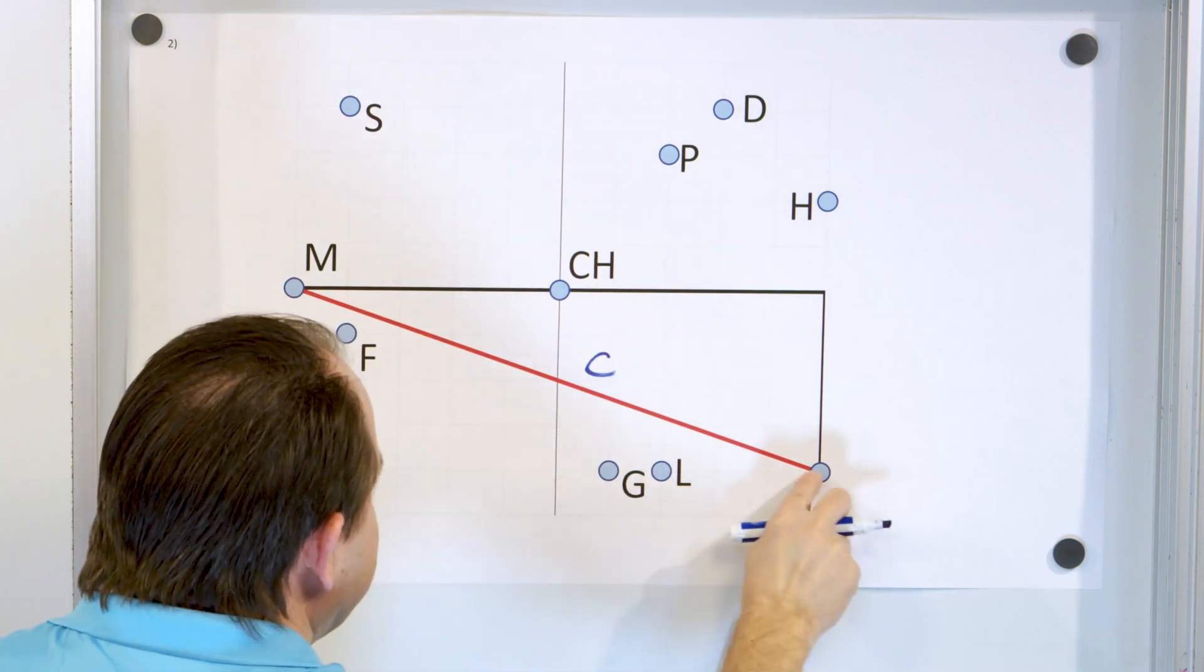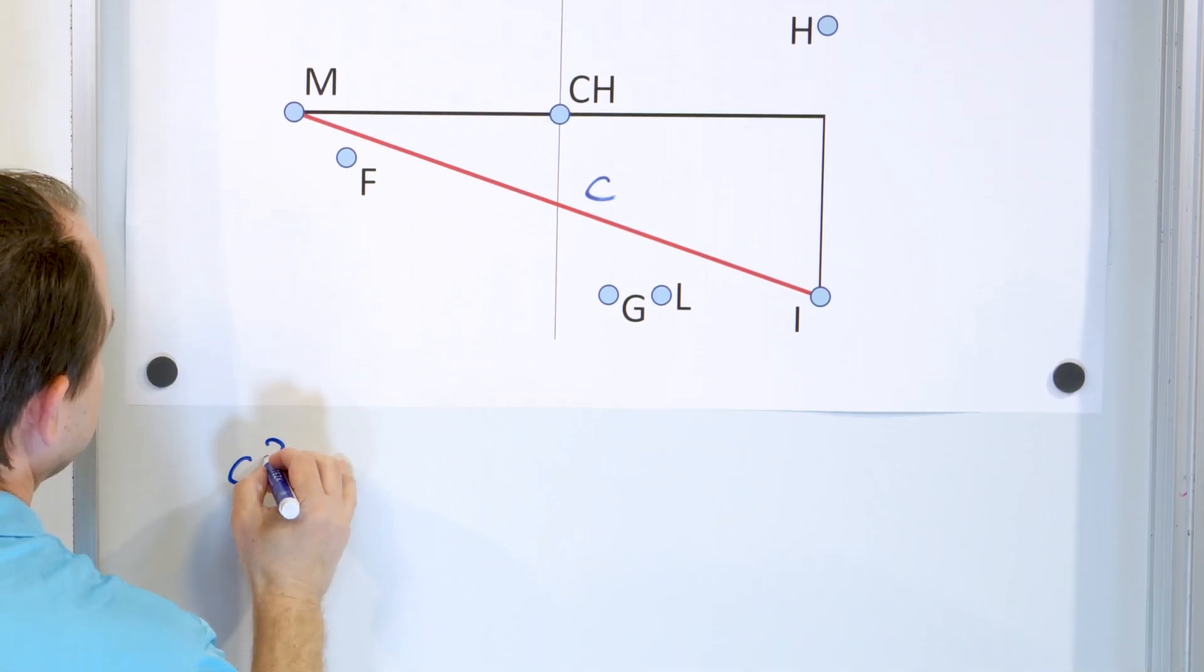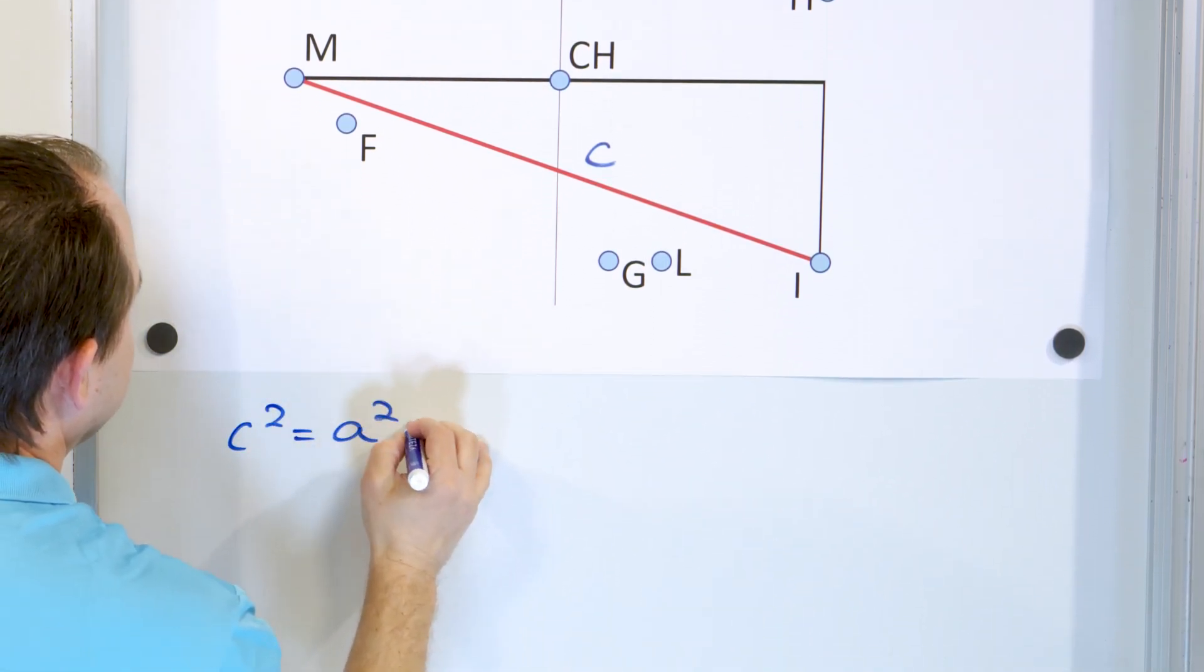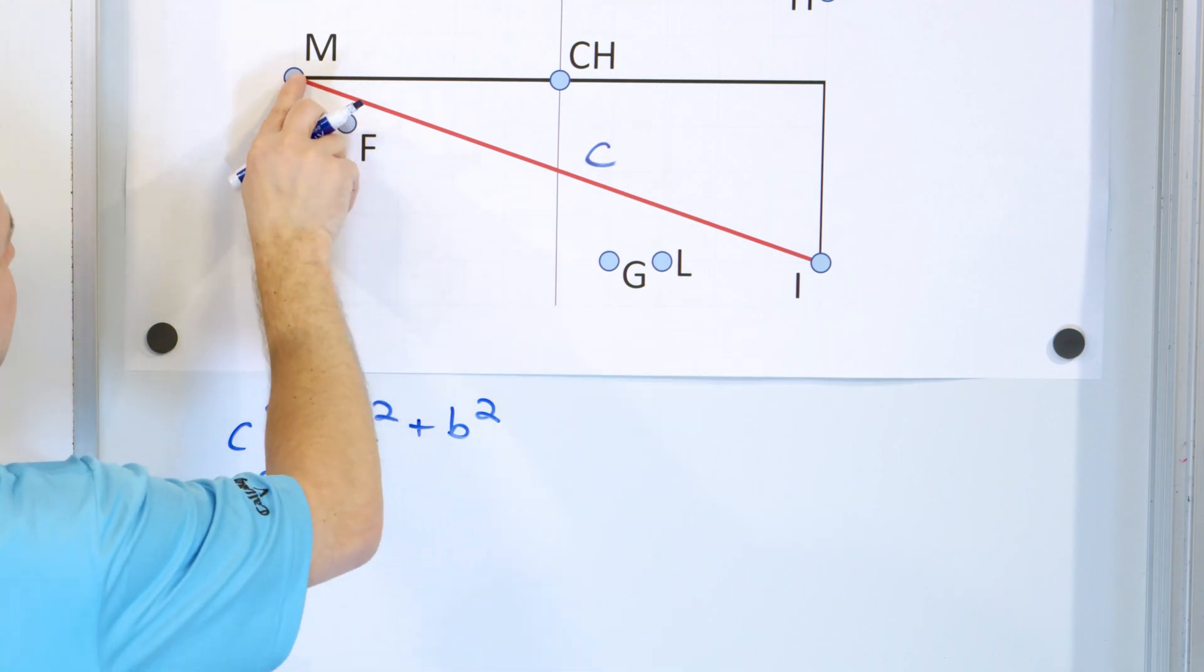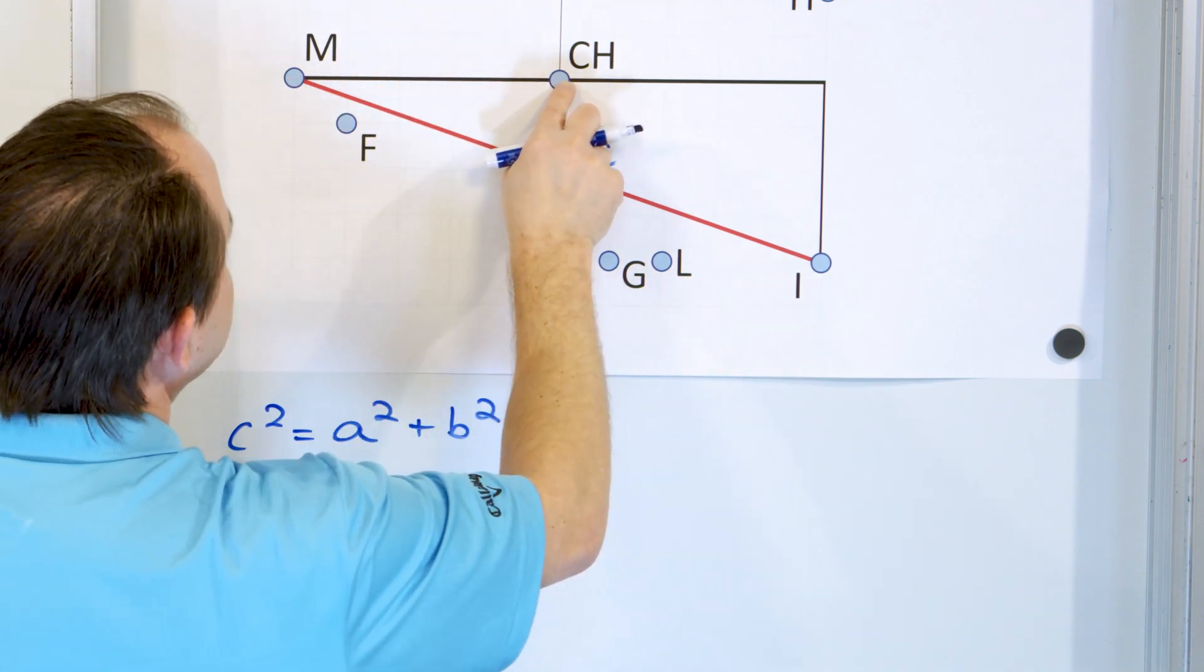The hypotenuse C is what we're trying to find here. So C² = a² + b². Now C² is then equal to one side here is one, two, three, four, five, six, seven, eight, nine, 10. So it's 10².